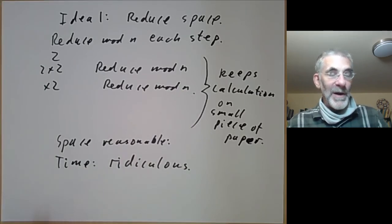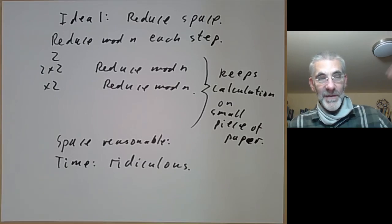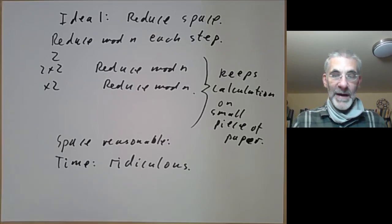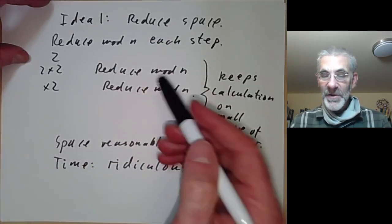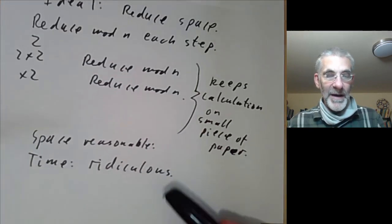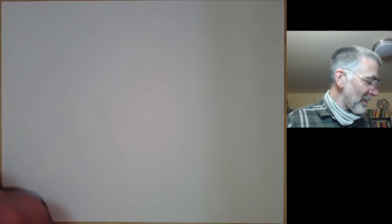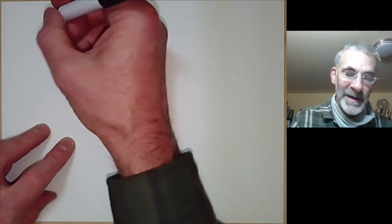This idea of reducing mod n each step is a very common idea whenever you're doing calculations modulo a number. For instance, if you wish to calculate a determinant modulo some number, what you do is you reduce modulo n every step and that keeps the numbers reasonably small and makes the calculation a lot quicker. This idea of reducing mod n each step is a very basic idea in doing numerical calculations on large numbers. We've still got to do something about the time and there's a neat method of doing this. The basic idea actually goes back several thousand years to ancient Egypt.